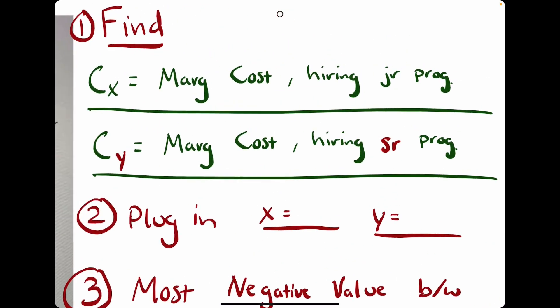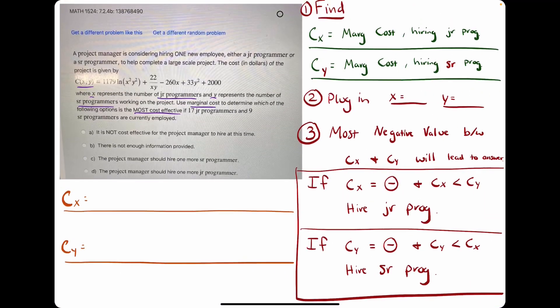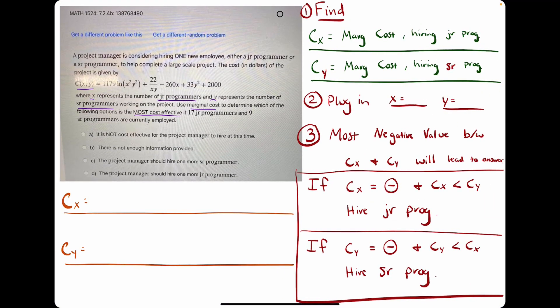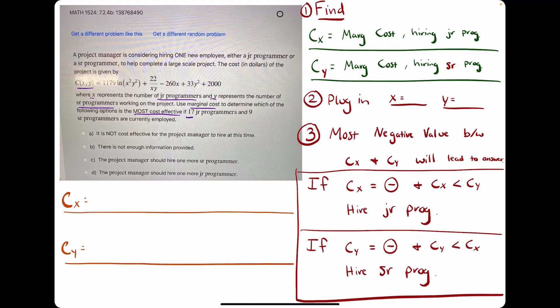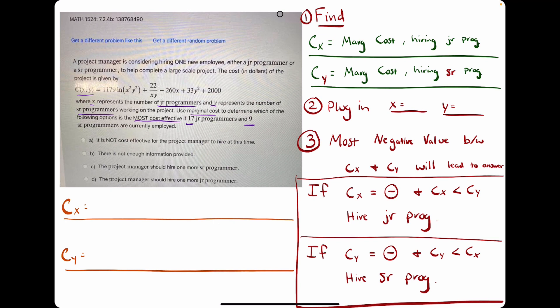The way this works is we want to find first the derivatives with respect to x and y. So the first derivative with respect to x, first derivative with respect to y. Once we have those, we will plug in the x and y values that they give us in the problem statement. So 17 junior programmers would be our x value.